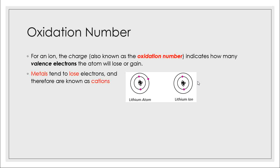Take a look at the picture here: the lithium atom has one valence electron, but when it becomes an ion, that one electron goes away. You'll notice it doesn't have that one valence electron anymore — it instead has two total valence electrons.